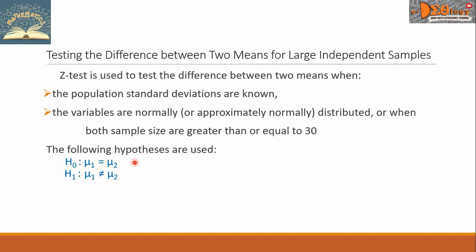It means the two population means are equal. Next, H sub one, this is the alternative hypothesis: mu sub one is not equal to mu sub two.